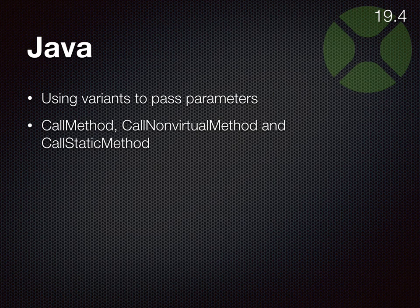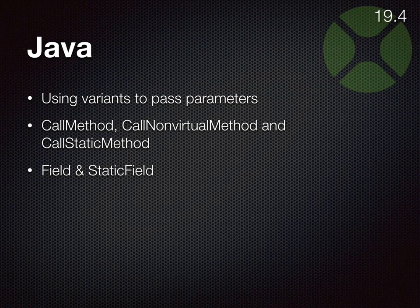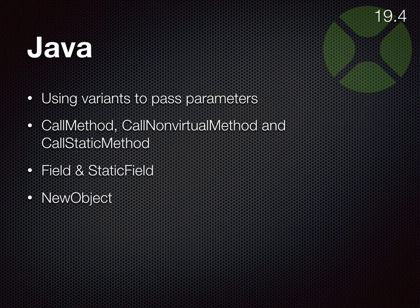We have three method-calling methods. On a Java class object you can call the static method, and on an object you can call the normal or non-virtual method, which avoids calling an overwritten method. We have field and static field to get properties from a Java class. With NewObject you can call the constructor and also pass the parameters as variants.